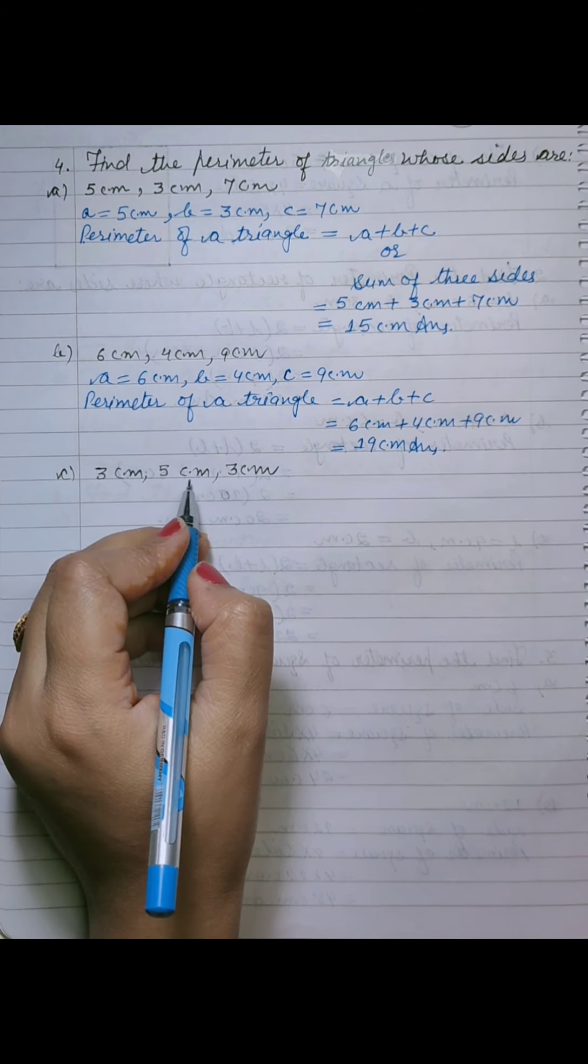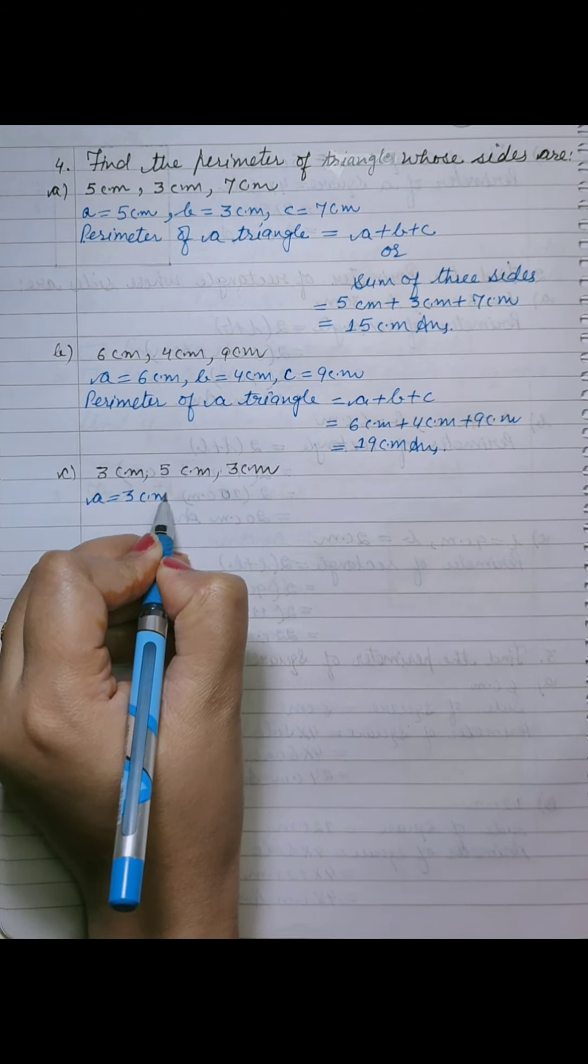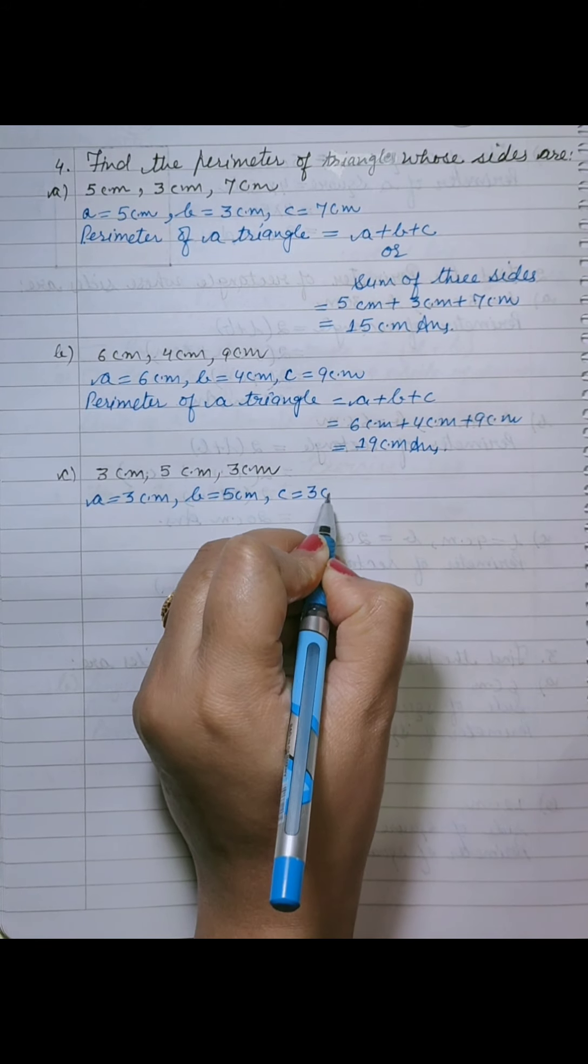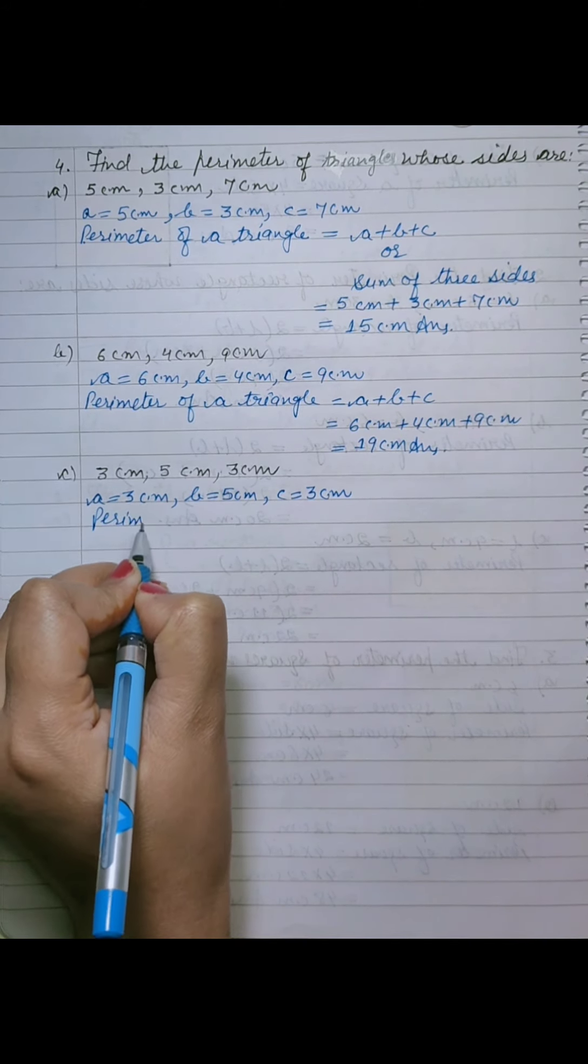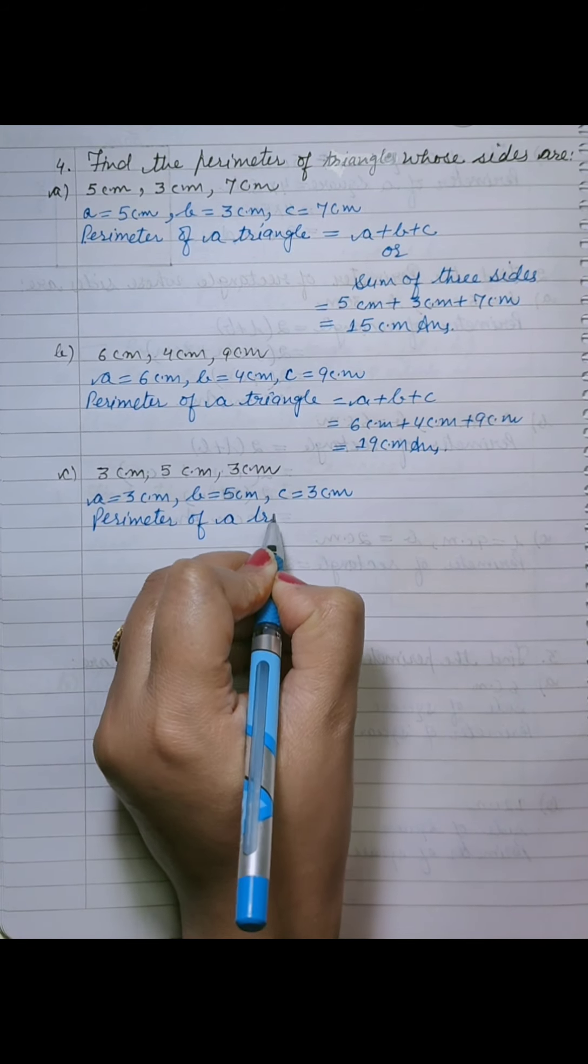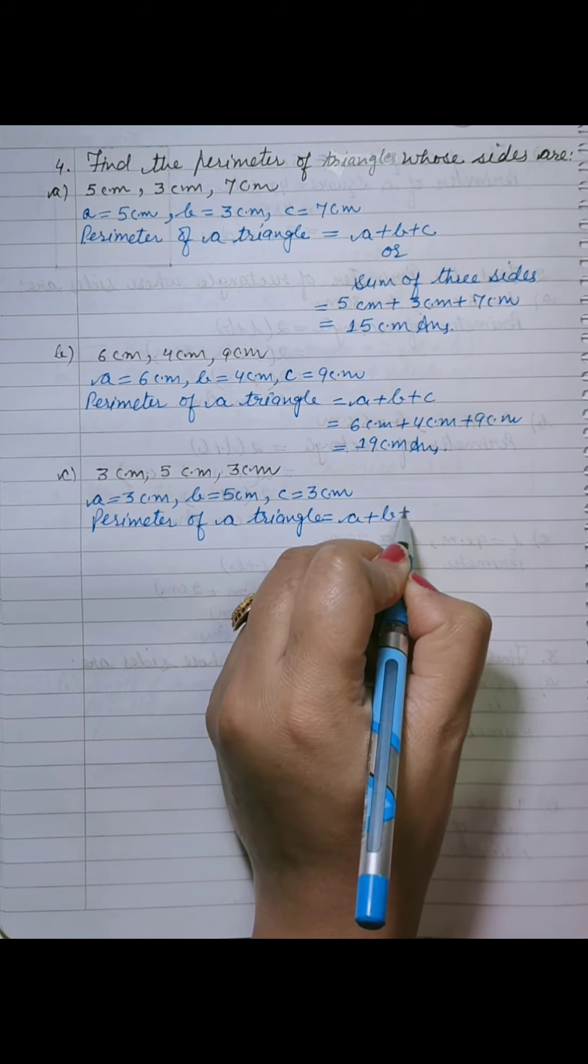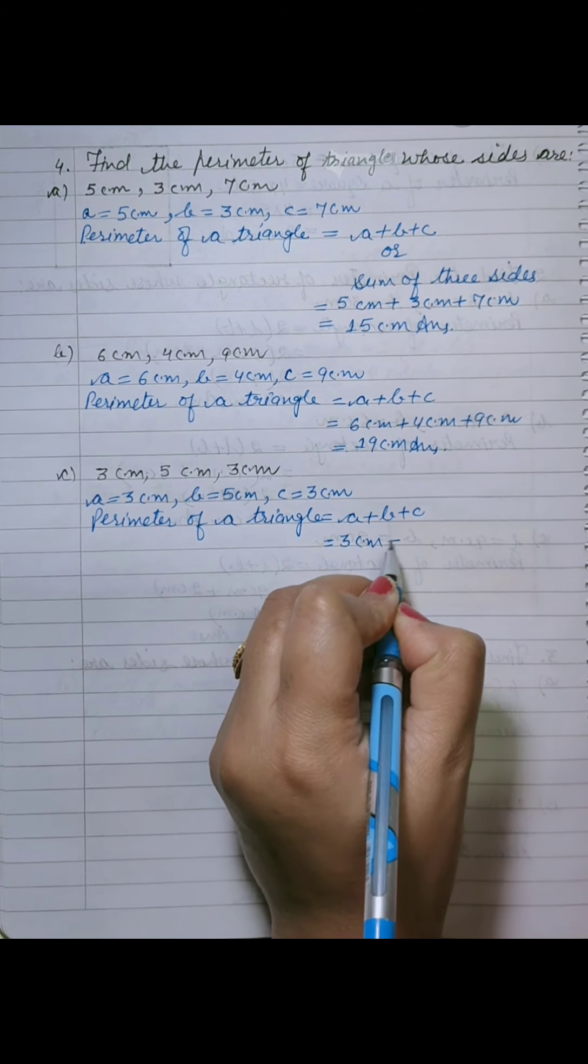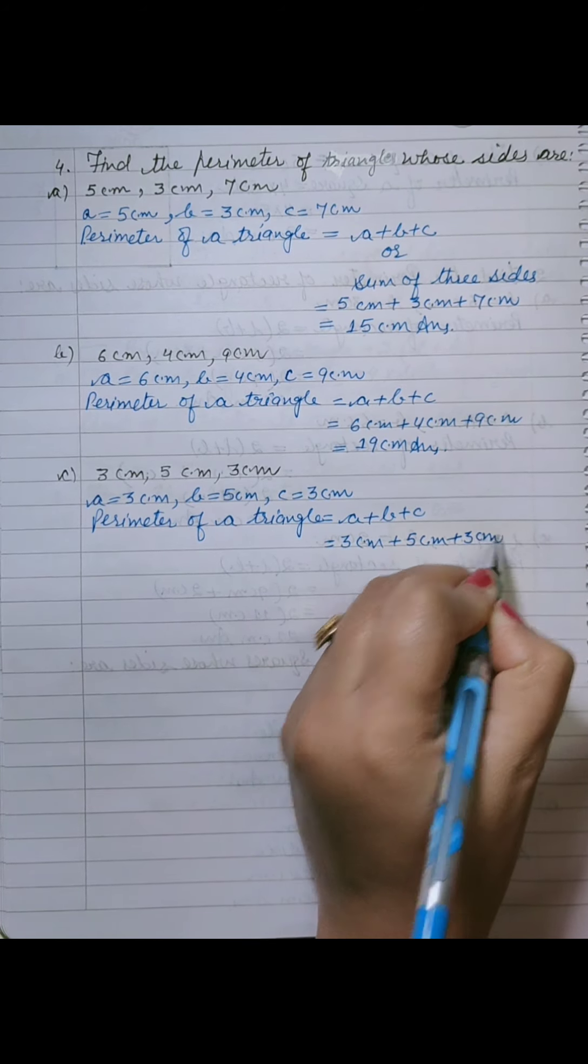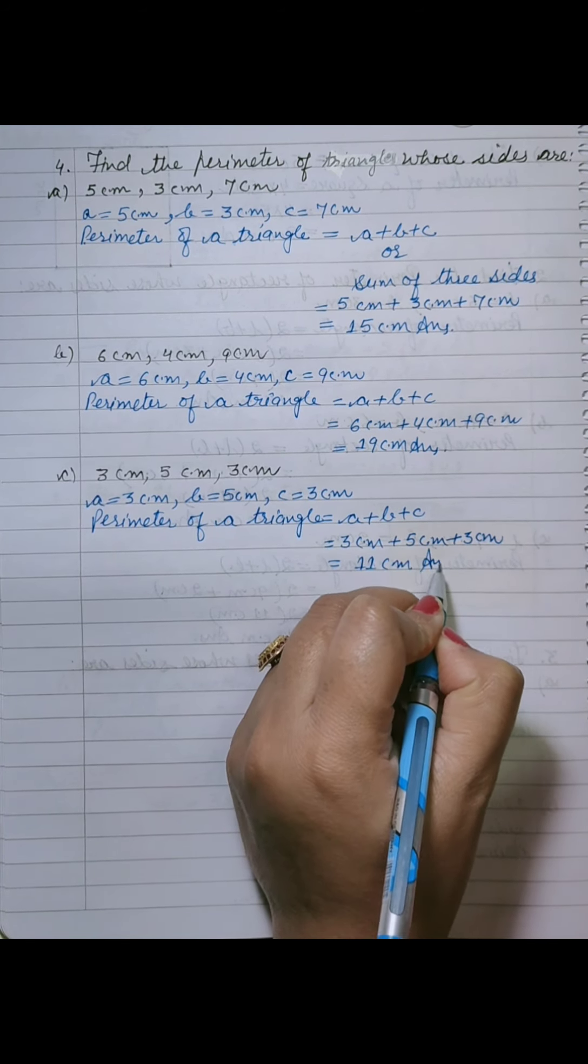Now, it is c part 3 centimetre, 5 centimetre and 3 centimetre. A is equal to 3 centimetre, b is equal to 5 centimetre, c is equal to 3 centimetre. Perimeter, perimeter of a triangle. Triangle ka perimeter, side a plus b plus c means 3 centimetre plus 5 centimetre plus 3 centimetre. 5 plus 3, 8 plus 3, 11. It is 11 centimetre. Right?